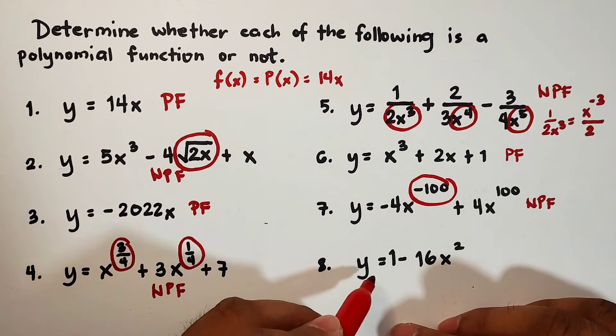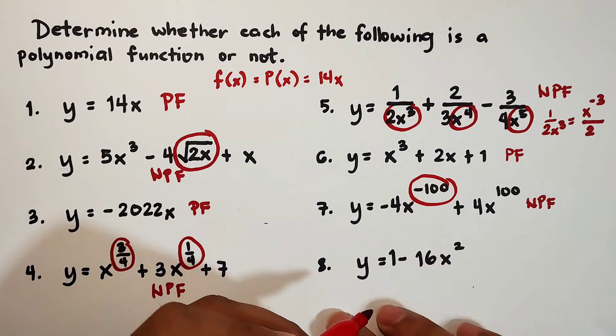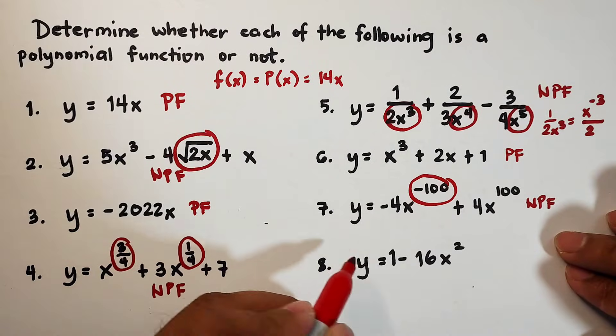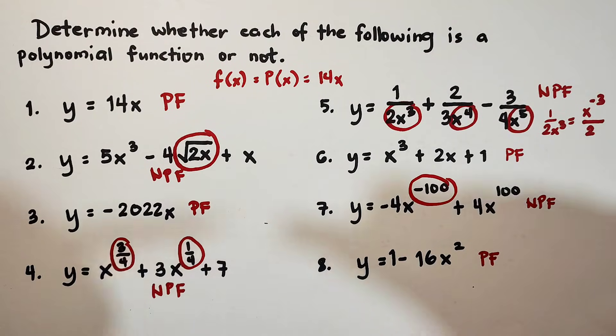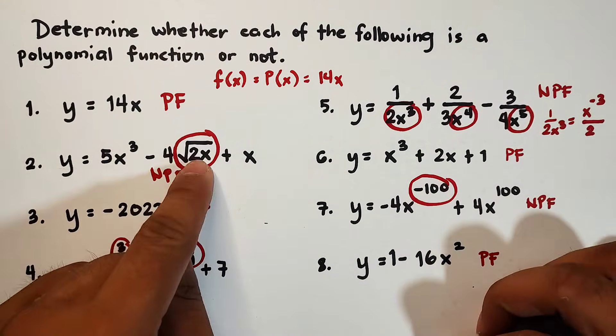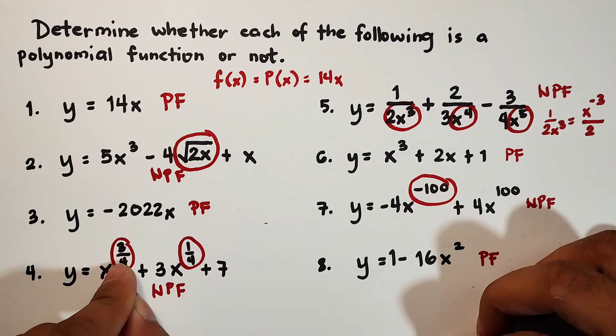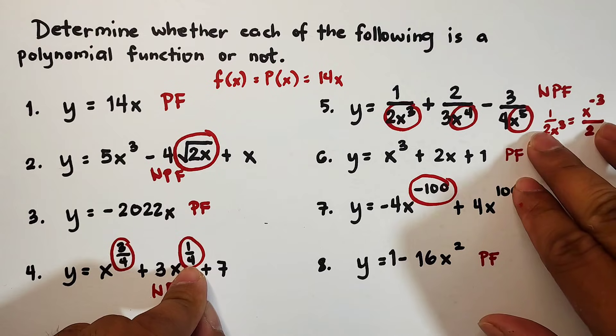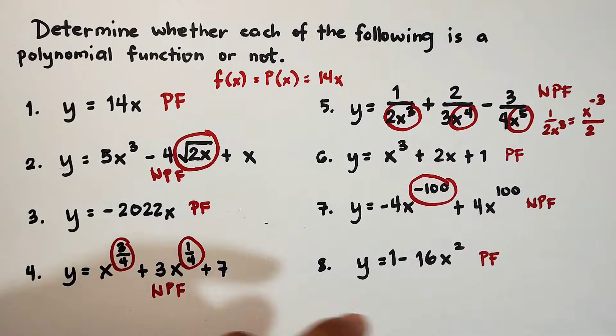Lastly, 8. y is equal to 1 minus 16x squared. Though it's not arranged properly, this one is a polynomial function. So, I hope guys you understood the restrictions. Why we consider a function as polynomial function and why not? No variable inside the radical sign. No fractional exponents. No negative exponent. We cannot have variable in the denominator.